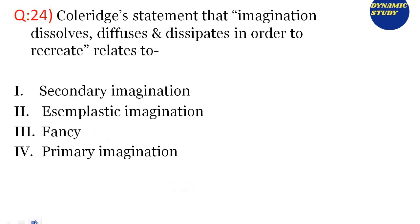Question 24: Coleridge's statement that imagination 'dissolves, diffuses and dissipates in order to recreate' — found in his famous critical work Biographia Literaria — relates to which kind of imagination? Option 1: Secondary Imagination. Option 2: Esemplastic Imagination. Option 3: Fancy. Option 4: Primary Imagination. The correct answer is Secondary Imagination, option number 1.